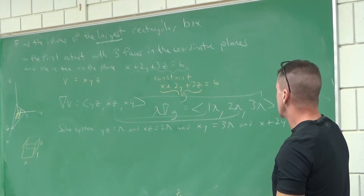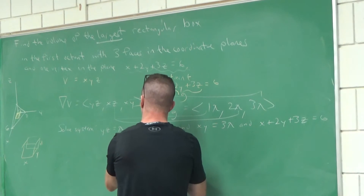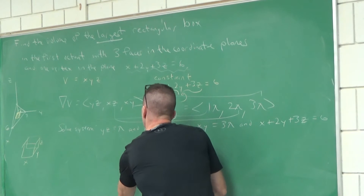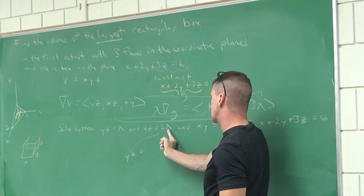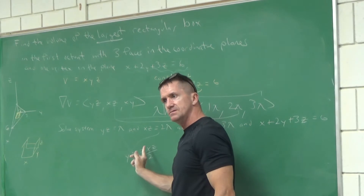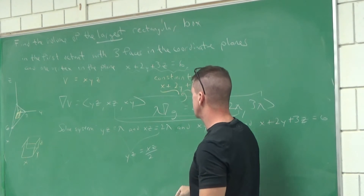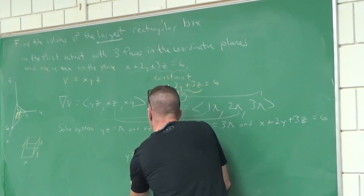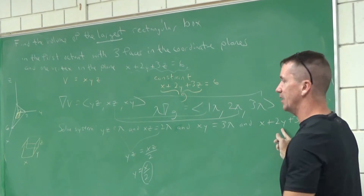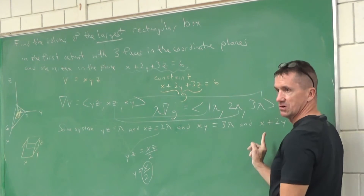Alright, there are different ways to solve the system. When both equations have lambdas, you can set them equal to each other. If lambda equals YZ and lambda equals XZ over two, I can set those equal. What can I cancel out? The Z's. So Y must equal X over two.